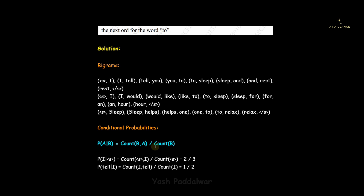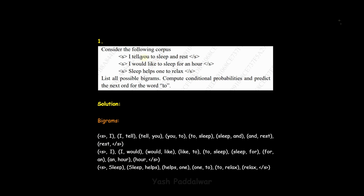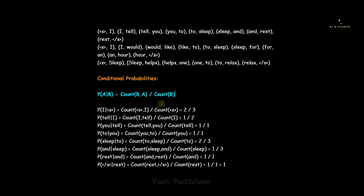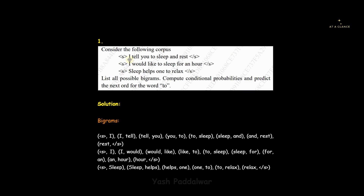A small trick to remember this formula: whenever you see P(a|b), you reverse it — you find the count of b and a together. Since b is at the bottom of the expression, in the denominator you find the count of b. With this formula we can now find the conditional probabilities of every single bigram. The very first pair is the S-tag and the word 'I', where S-tag is the previous word and 'I' is the next word.